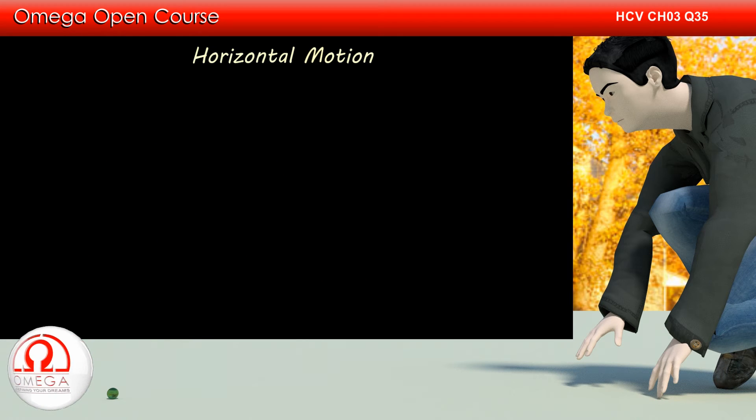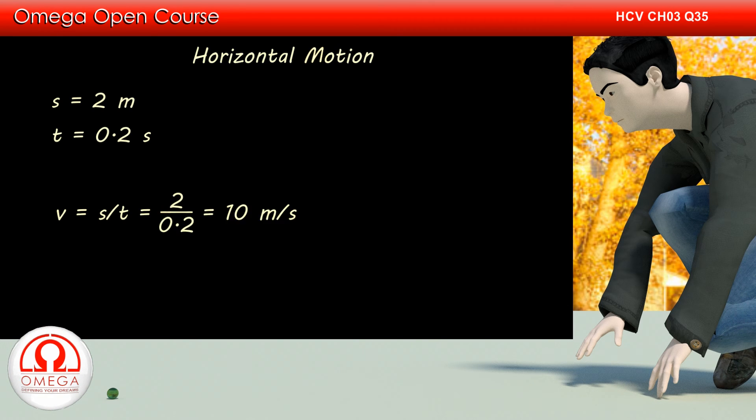Now, let us look at the horizontal motion of the goalie. The distance travelled by the goalie is 2 meters and the time of motion is 0.2 seconds. Therefore the horizontal speed of the goalie equals distance travelled by time taken, or 2 divided by 0.2, which equals 10 meters per second. This is our answer.